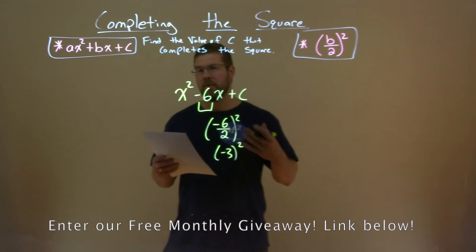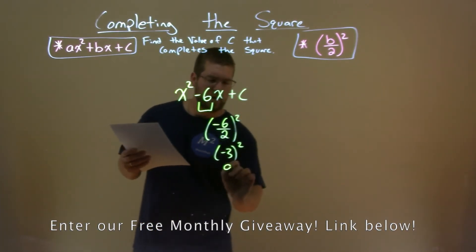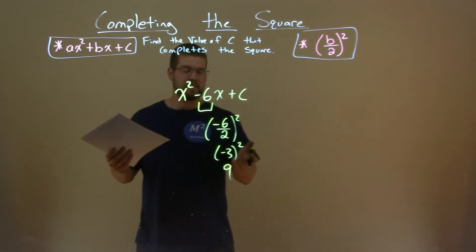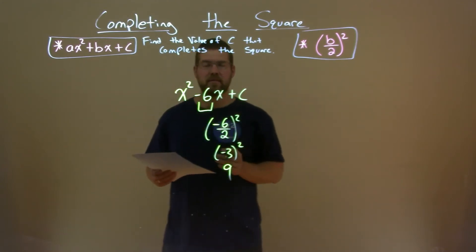Well a negative squared is a positive, 3 squared is 9. So we have 9 here, so that's it. 9 is the value of c that completes the square.